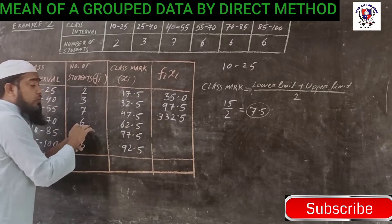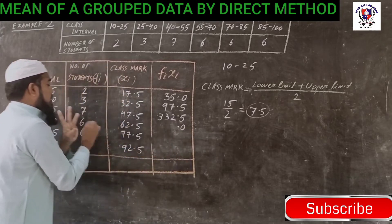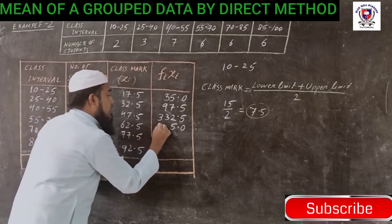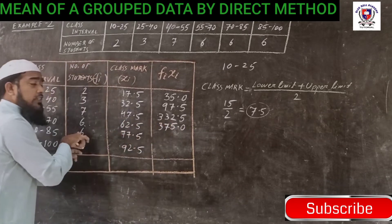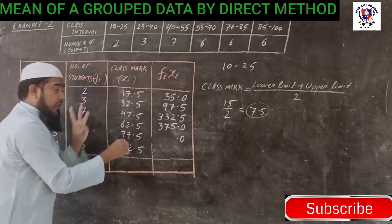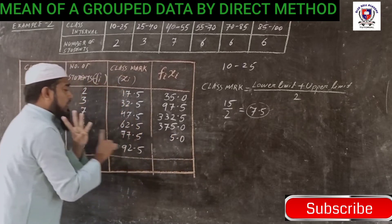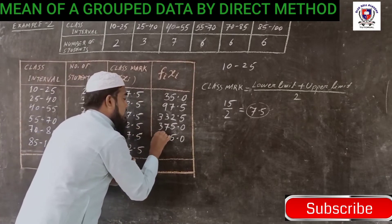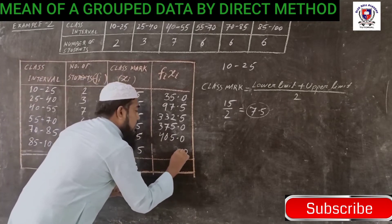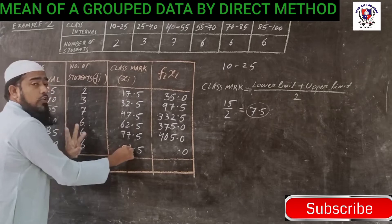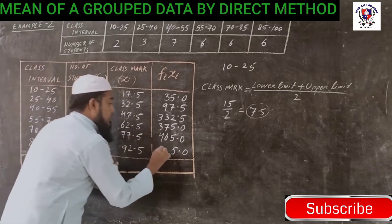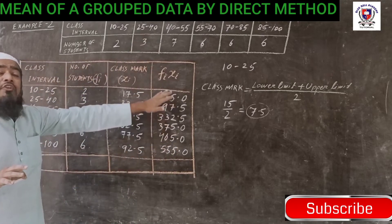Next 62.5 into 6: 6 times 5 is 30, so 0, 3 carry. 6 times 2 is 12 plus 3 is 15, 5, 1 carry. 6 times 6 is 36 plus 1 is 37. So 375.0. Now 77.5 into 6: 6 times 5 is 30, 0, 3 carry. 6 times 7 is 42 plus 3 is 45, 4 carry. 6 times 7 is 42 plus 4 is 46. So 465.0. And the last, 92.5 into 6: 6 times 5 is 30, 0, 3 carry. 6 times 2 is 12 plus 3 is 15, 5, 1 carry. 6 times 9 is 54 plus 1 is 55. So 555.0. This is your fi times xi.